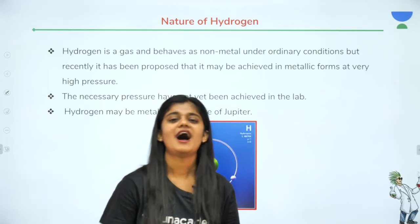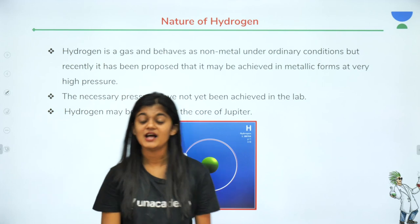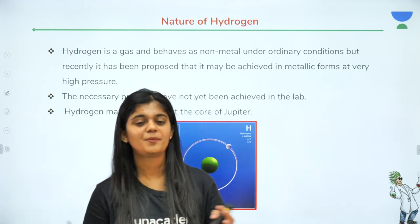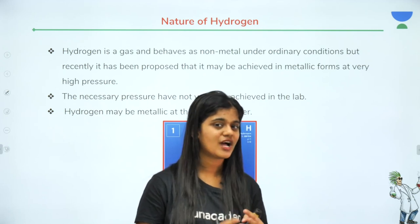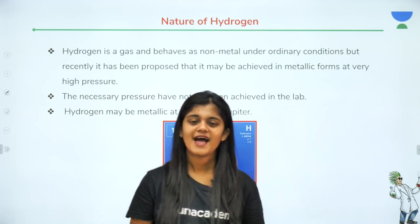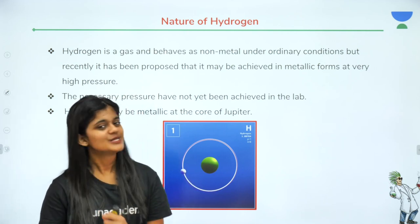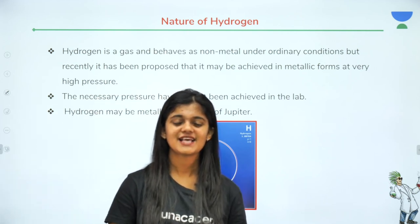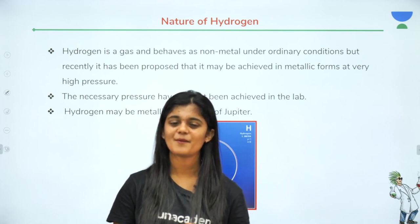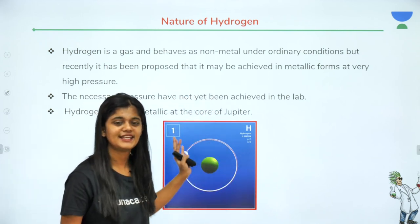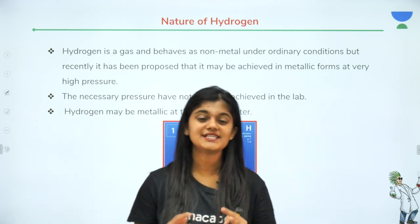Now we continue our lecture. We covered the basic preparation method of hydrogen and the industrial method — electrolysis of water and the Bosch process. Next we continue with the nature of hydrogen. Hydrogen exists in gaseous form and it is a non-metal.